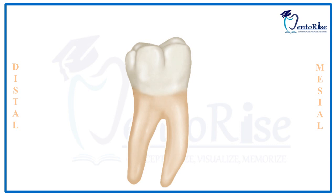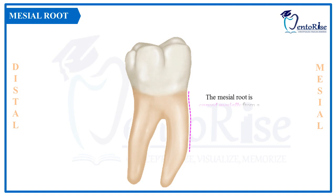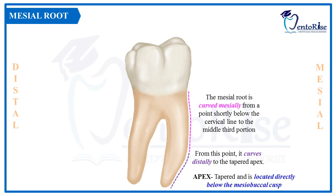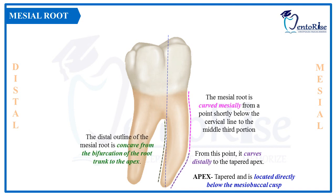Focusing on the mesial root: the mesial outline of the mesial root, demarcated in pink, is curved from the cervical line till the middle third portion. After the middle third, this outline curves distally till the apex, demarcated in purple. The apex is tapered and located directly below the meso-buccal cusp. The distal outline of the mesial root is concave from the bifurcation till the apex of the root, as seen in the figure.